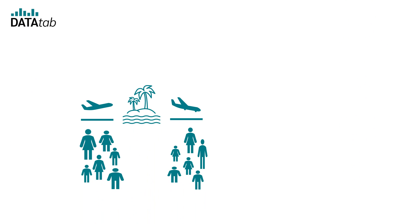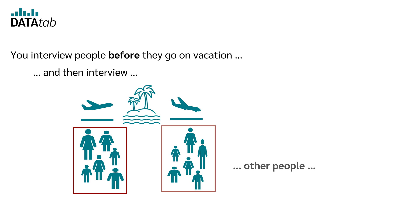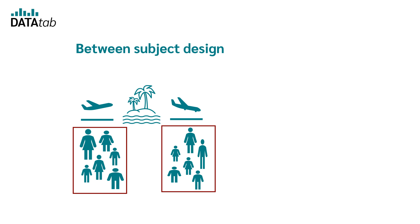Number one: you interview people before they go on vacation and then interview other people after their vacation. In this case, you would have a between-subjects design, because the people you interviewed before the vacation have nothing to do with the people you interviewed after the vacation.